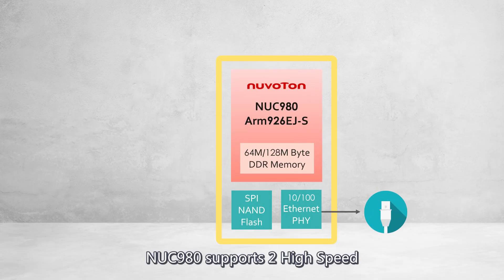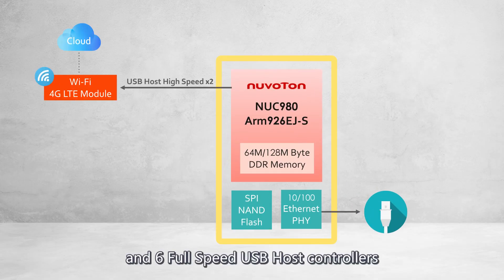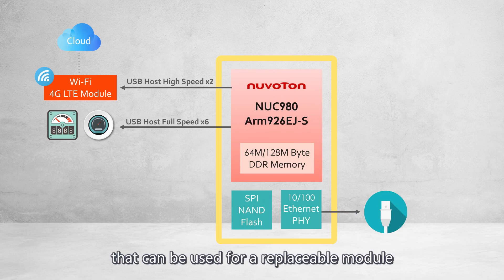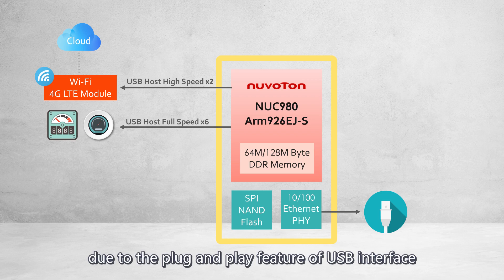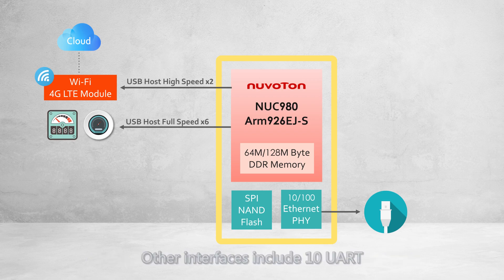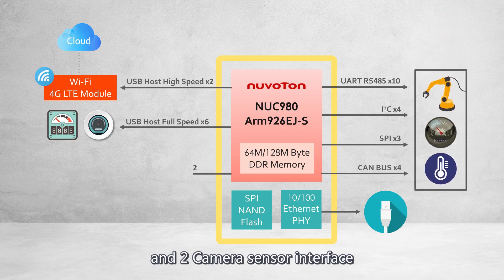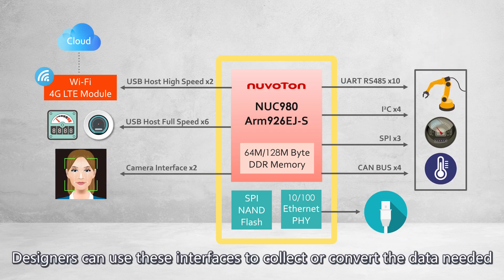NUC980 supports two high-speed and six full-speed USB host controllers that can be used for replaceable modules due to the plug-and-play feature of the USB interface. Other interfaces include 10 UART, 4 I2C, 3 SPI, 4 CAN bus, and 2 camera sensor interfaces. Designers can use these interfaces to collect or convert the data needed.